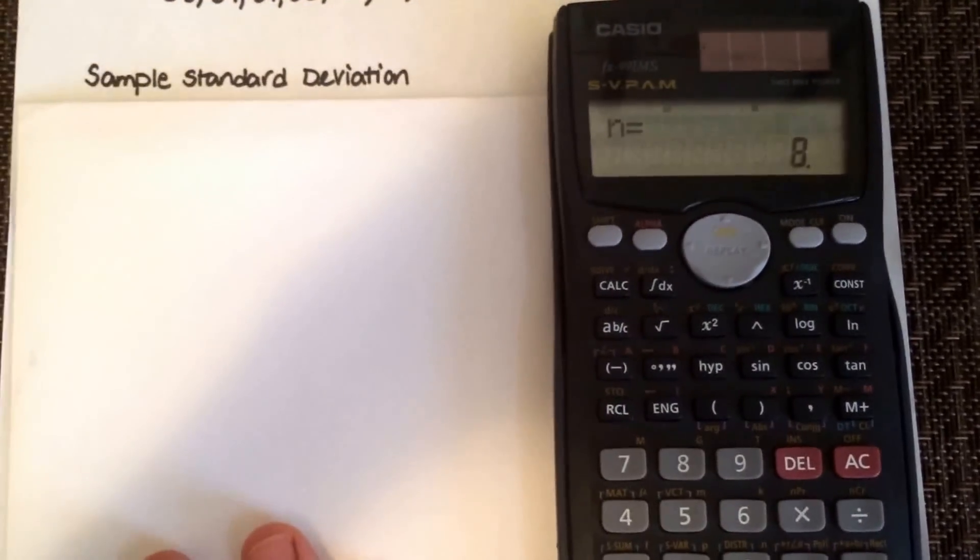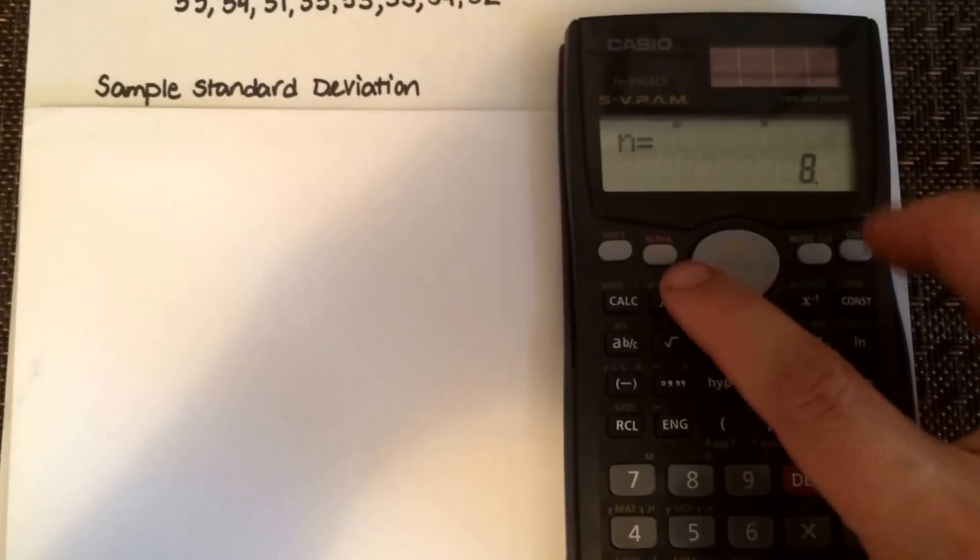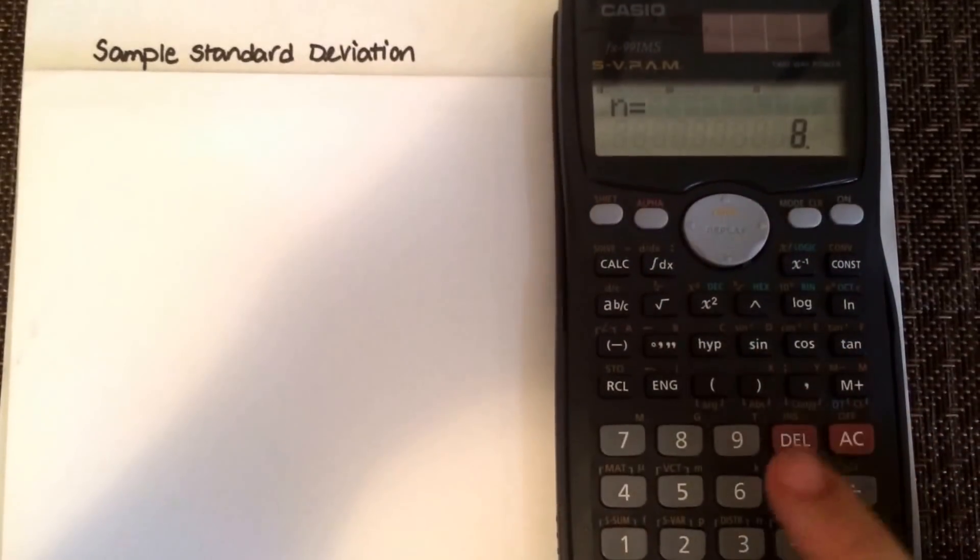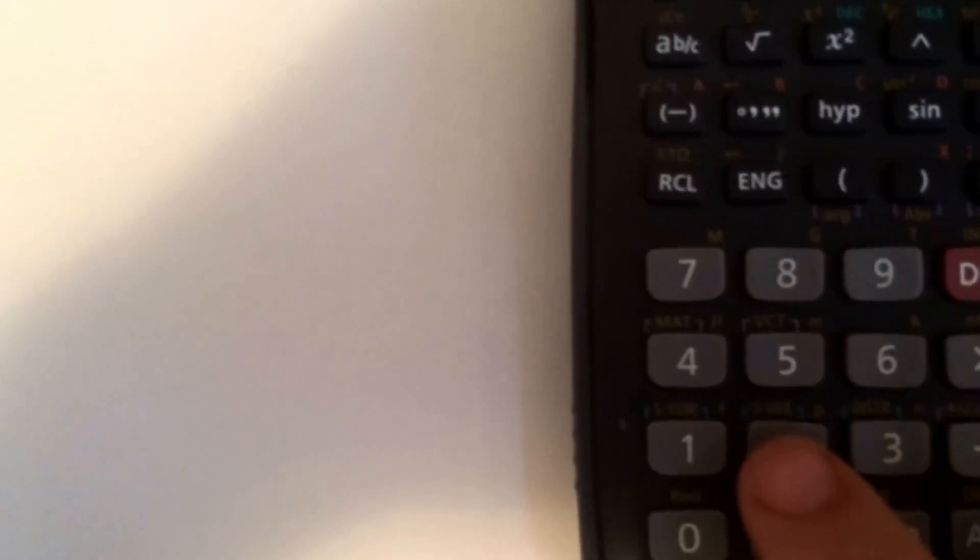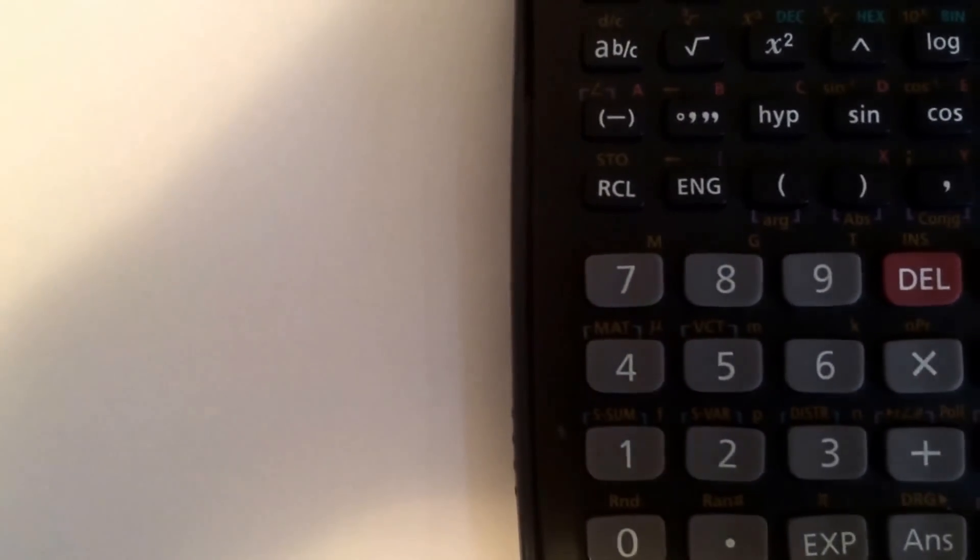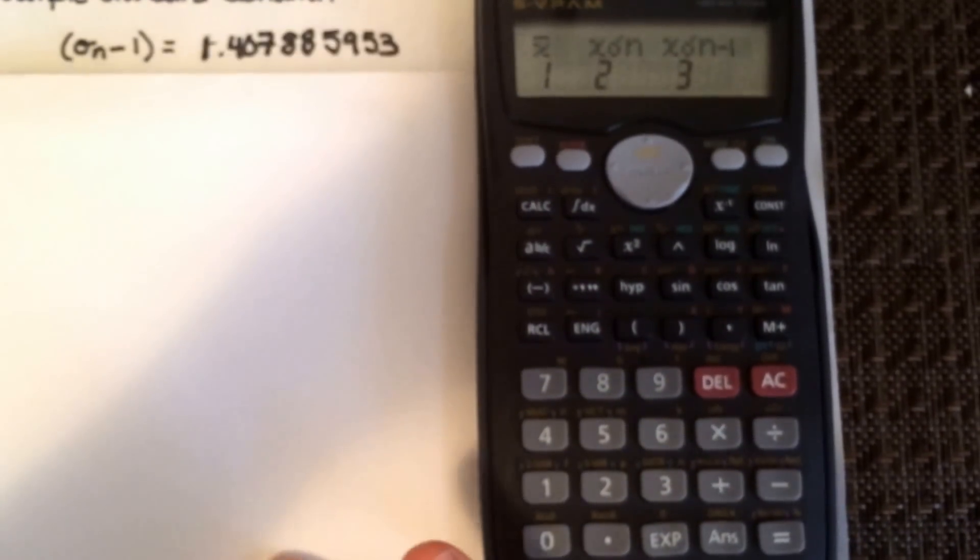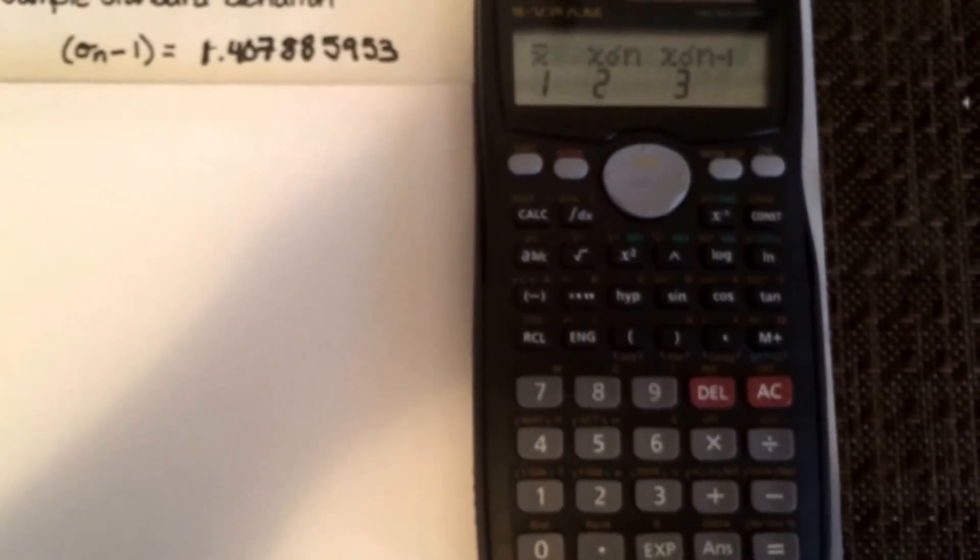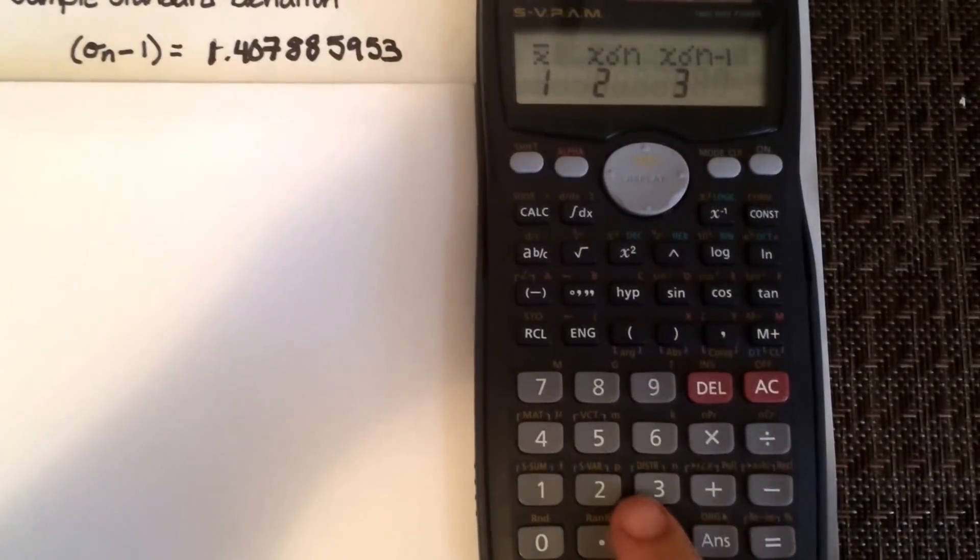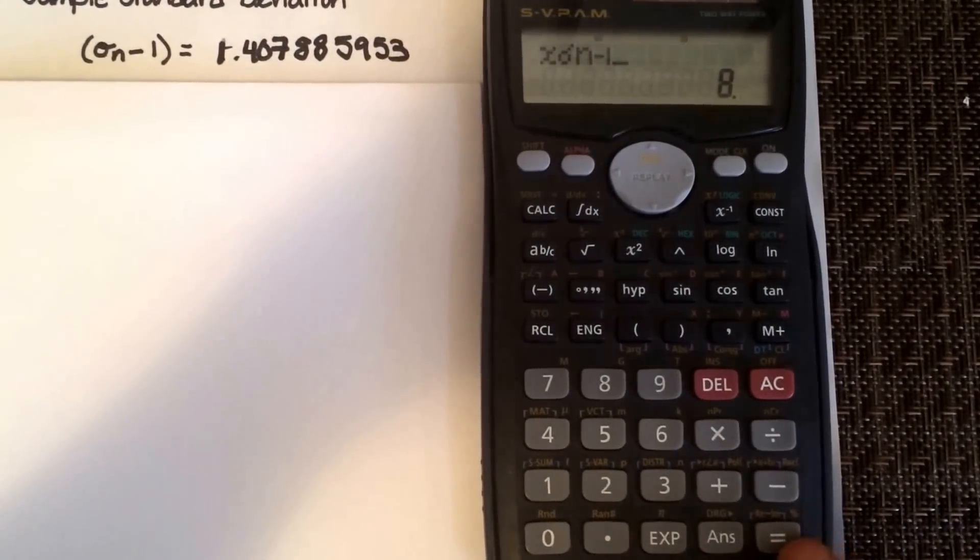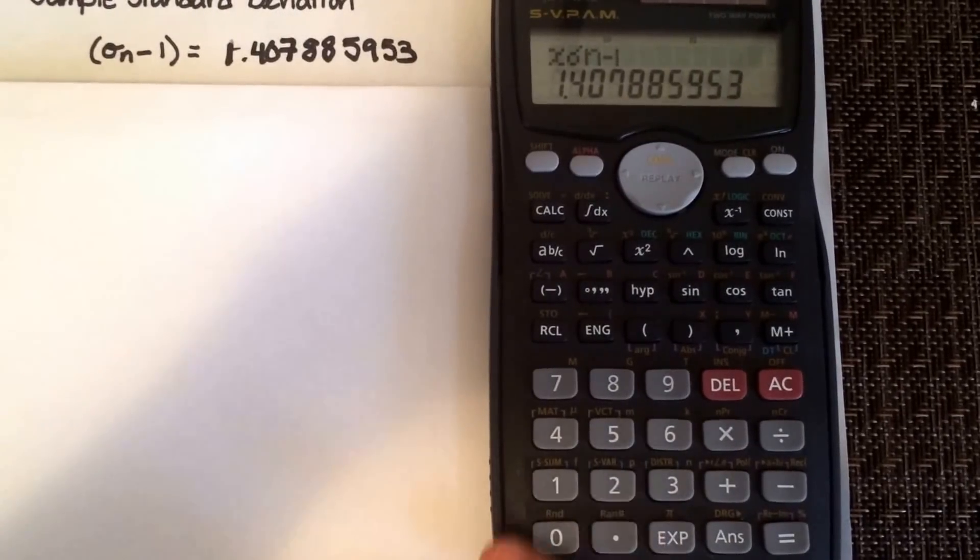Now we're going to actually get the calculations. First thing I'm going to find is the sample standard deviation. You're going to go to shift, and on top of two you'll see stat variable. That's what we're going to select and all this shows up. I want to get the sample standard deviation, which is the third. Select three, enter, and it gives you that data value.